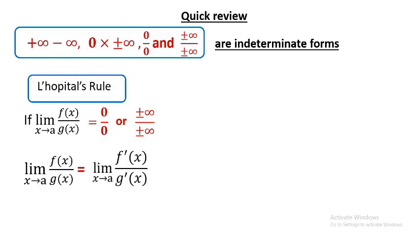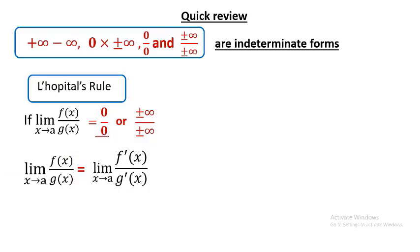L'Hôpital's rule says the limit of f(x) over g(x) as x approaches a will equal the limit as x approaches a of f′(x) over g′(x). We take the derivative of both numerator and denominator separately. Keep in mind: only in the condition 0 over 0, or infinity over infinity, are we able to apply L'Hôpital's rule.